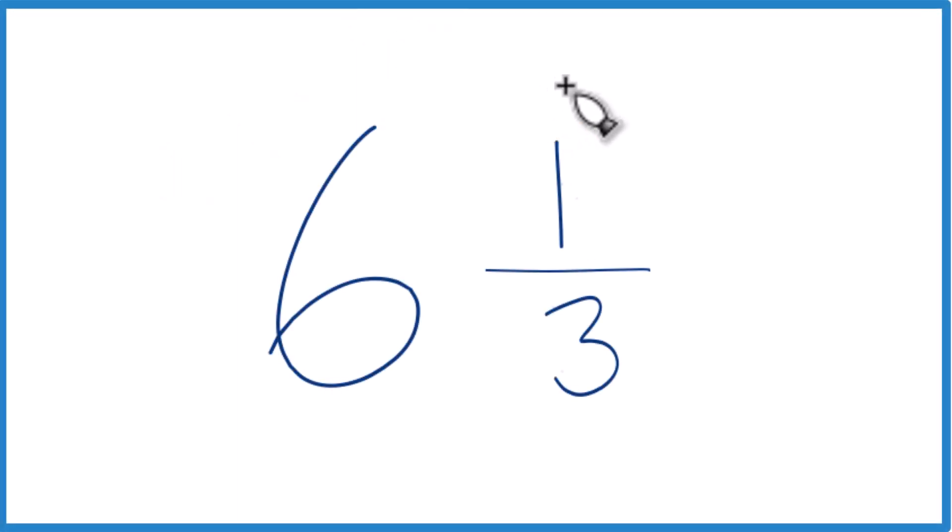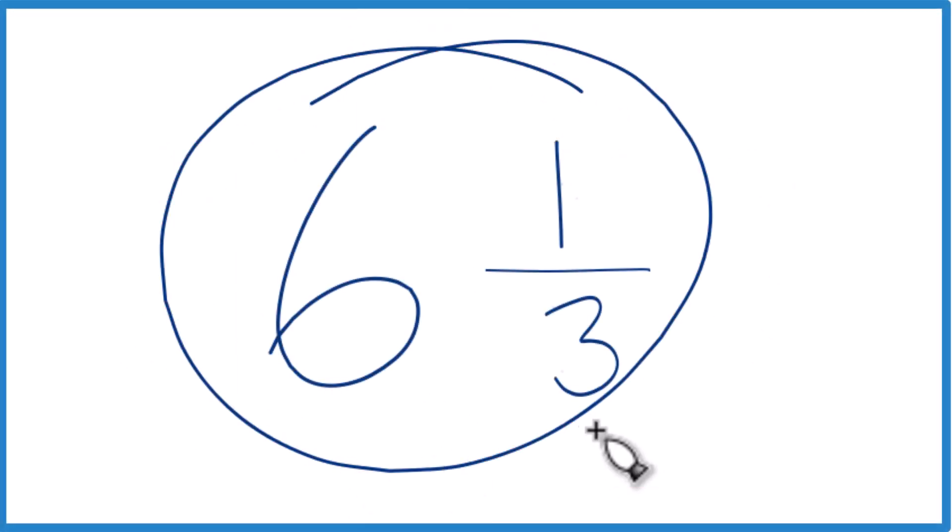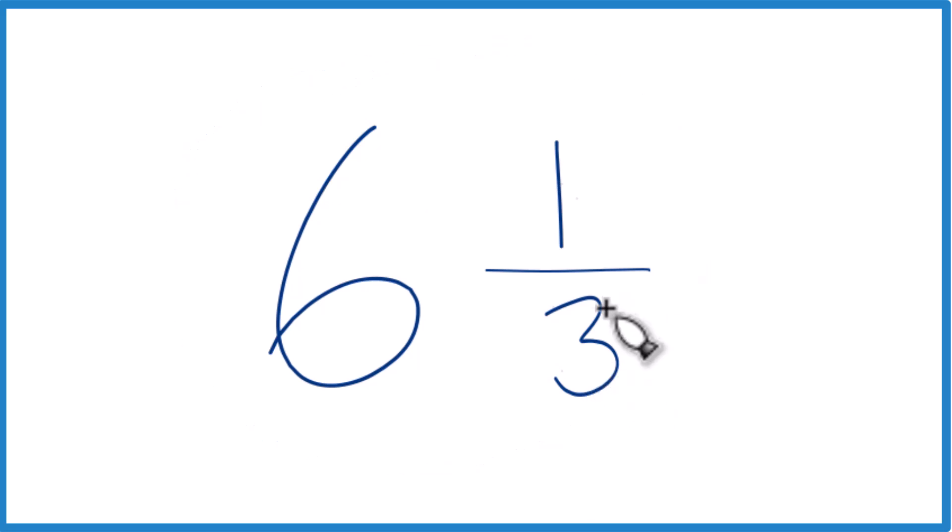Let's write the mixed number six and one-third as an improper fraction. And here's how you do it.